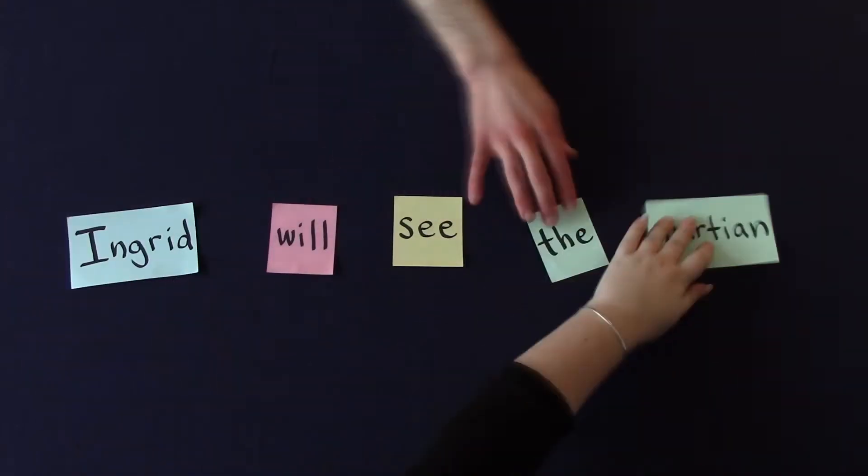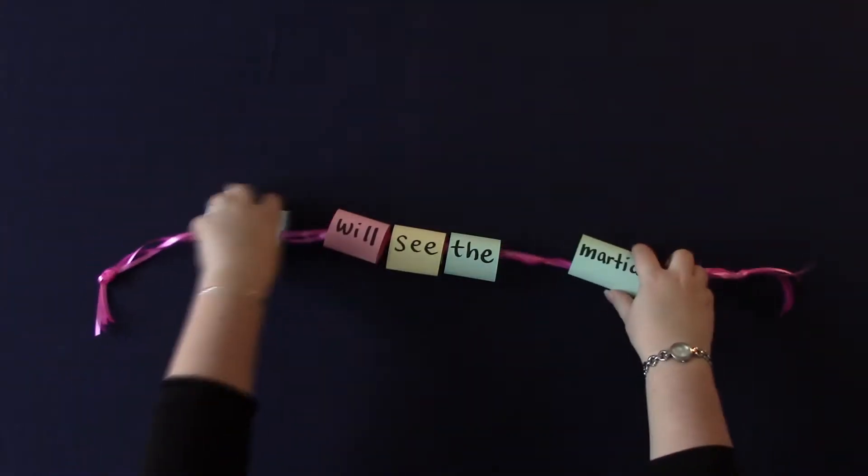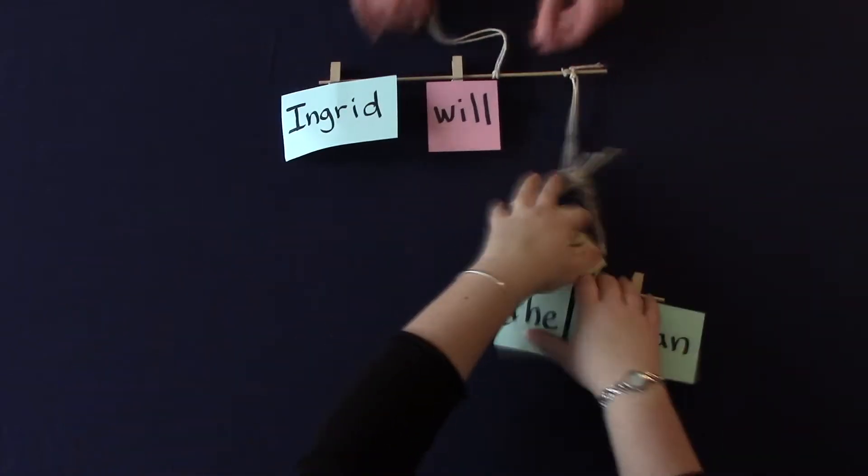How do the words in a sentence fit together? Are they more like the line of beads in a bracelet? Or like the dangly groups in a mobile?